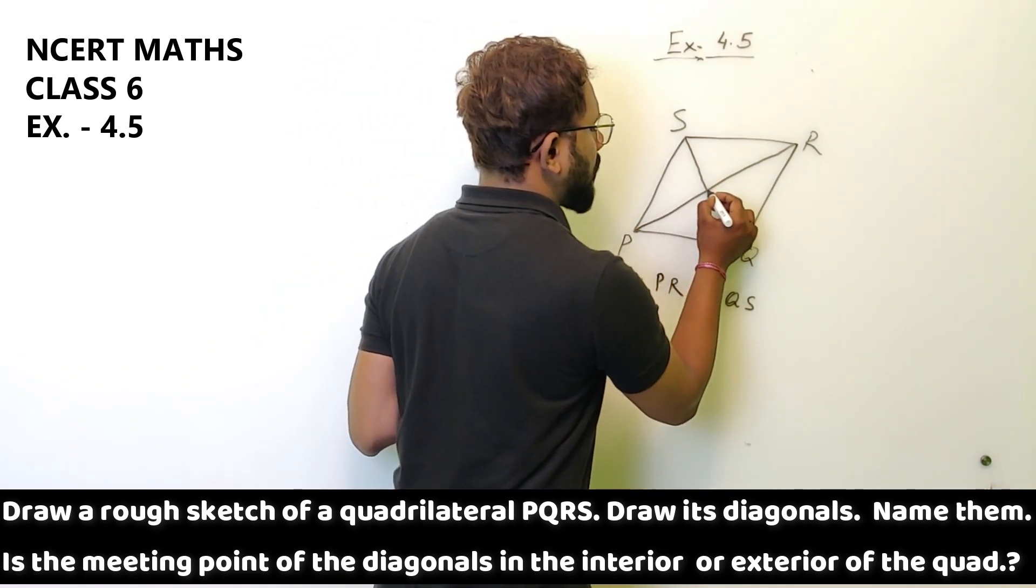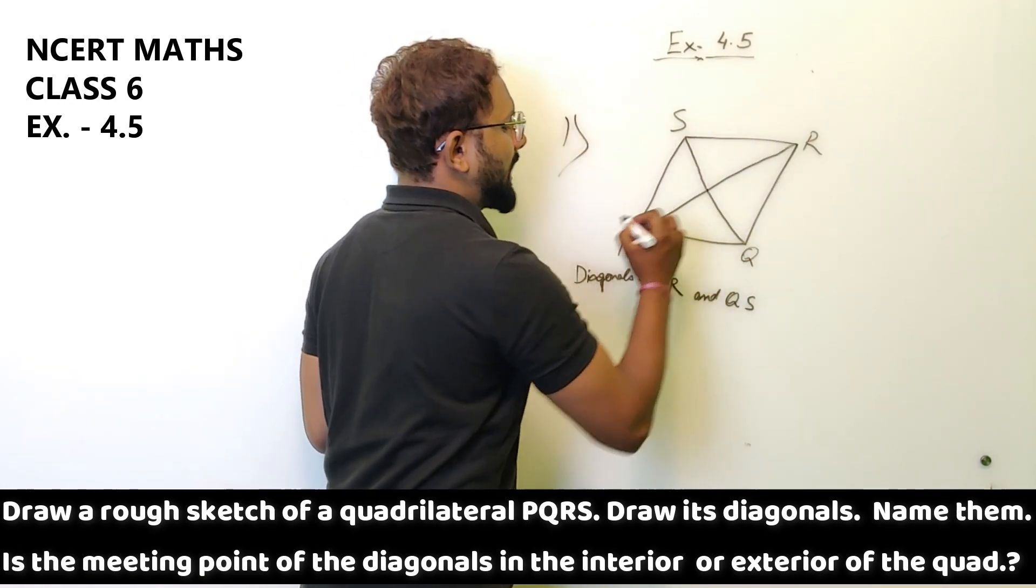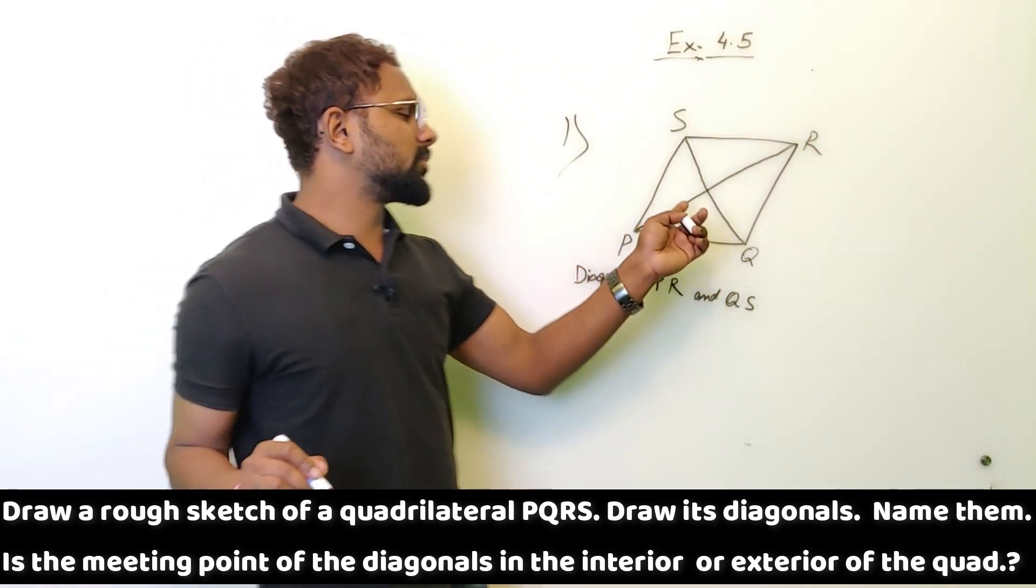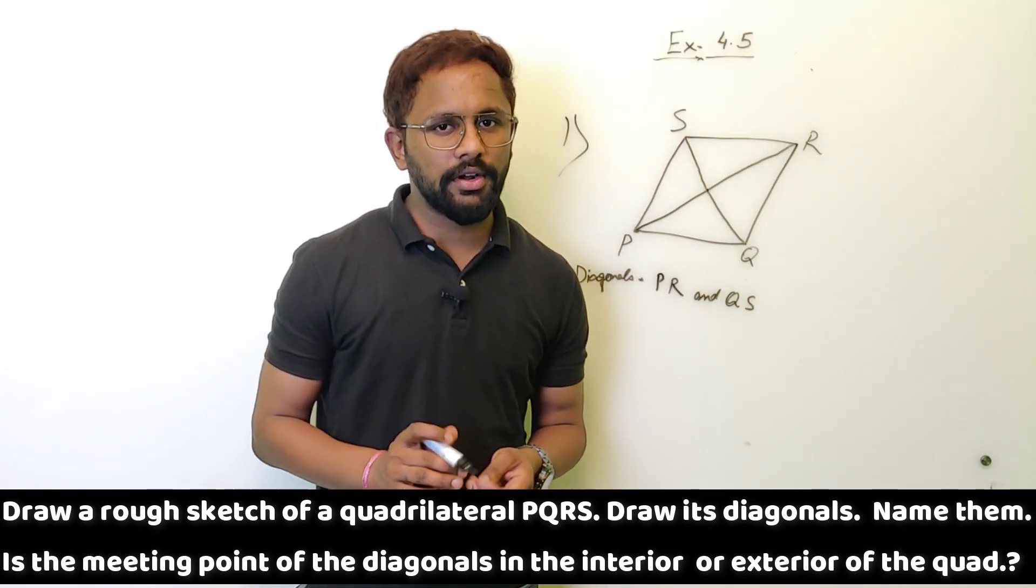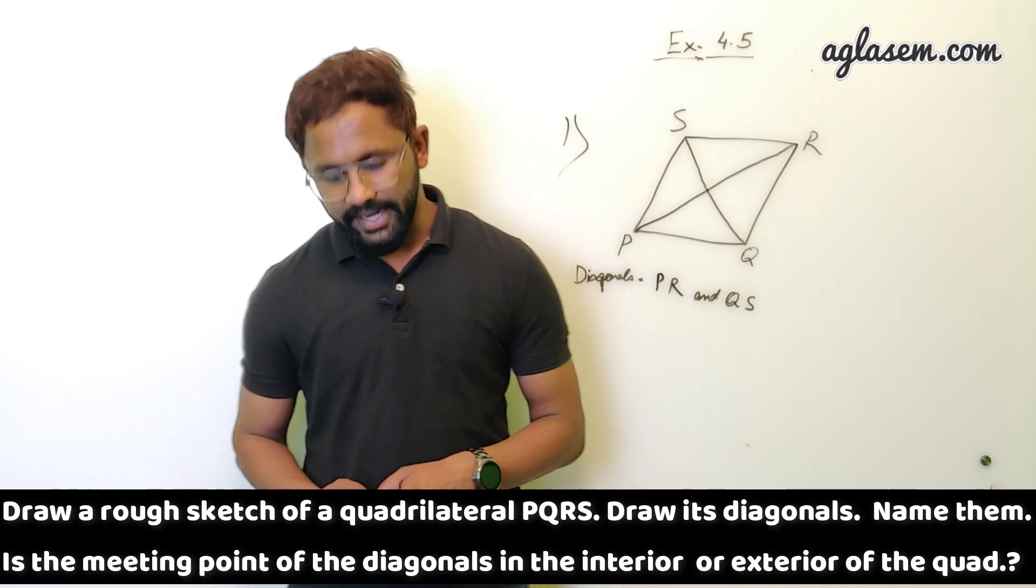Now this is the meeting point of the diagonals, which is in the interior of the quadrilateral. So the meeting point of the diagonals is in the interior of the quadrilateral, not at the exterior of the quadrilateral. Second question.